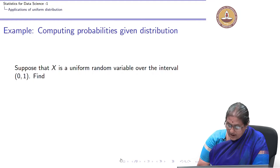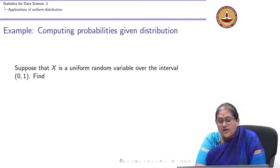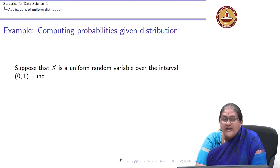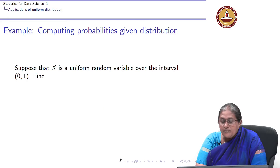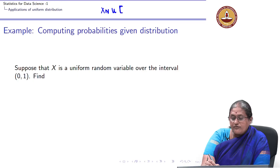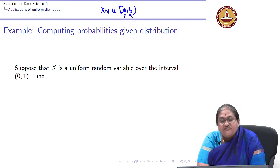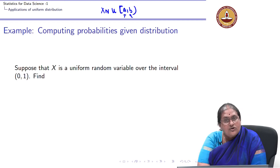Let us apply these concepts to compute probability given the distributional parameters. By parameters, I mean that when I say X is a uniform distribution between A and B, A and B are specified as the parameters of my distribution.